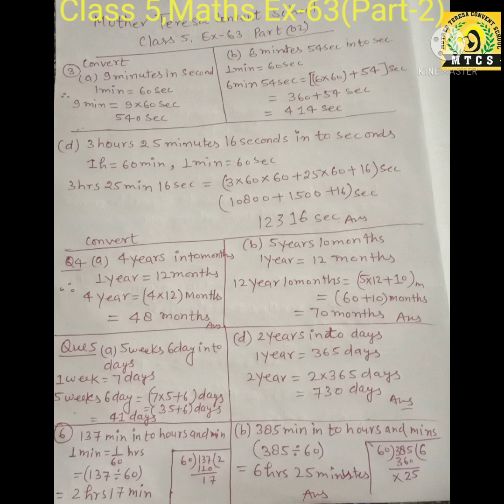Dividing 137 by 60, you will get quotient 2 and remainder 17, so 2 hours 17 minutes. Question B: 385 minutes into hours and minutes. So 385 divided by 60 — after dividing you will get quotient 6 and remainder 25. So the answer is 6 hours 25 minutes.